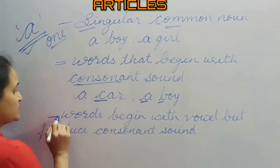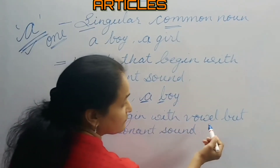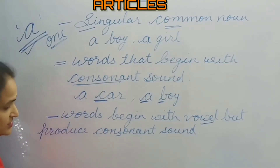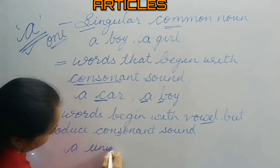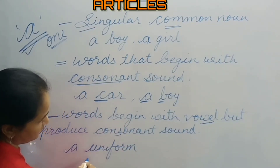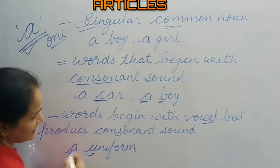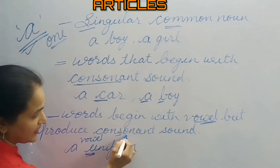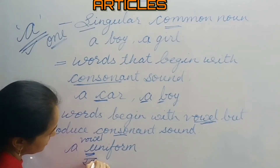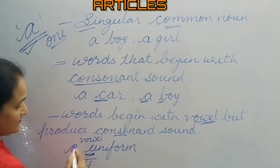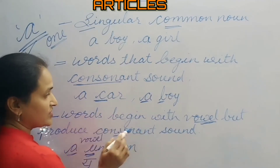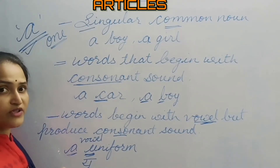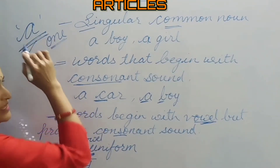We also use article 'a' before words that begin with a vowel letter but produce a consonant sound. For example, 'a uniform' — the first letter 'u' is a vowel, but it produces the consonant sound 'yu'. So we use article 'a' with this word. Other examples: a unicorn, a university. Before all these nouns, we use article 'a'.